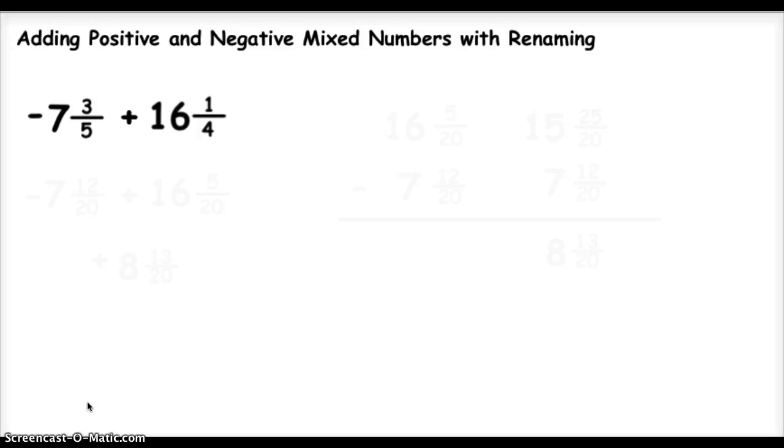This is a video that's going to help you add positive and negative mixed numbers with renaming. Let's look at our example. My example is negative 7 and 3 fifths plus 16 and 1 fourth.